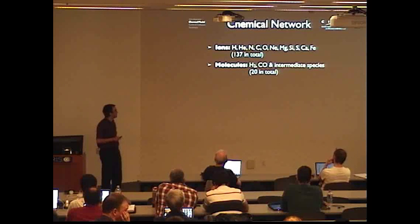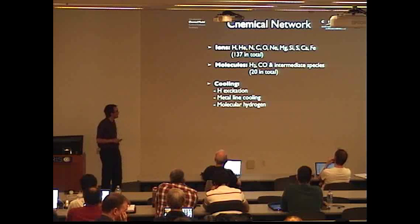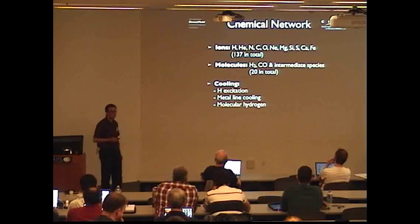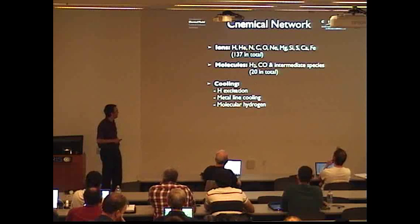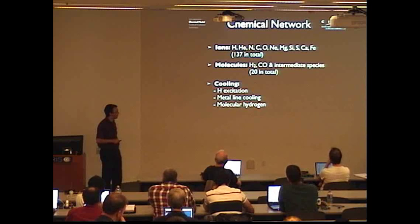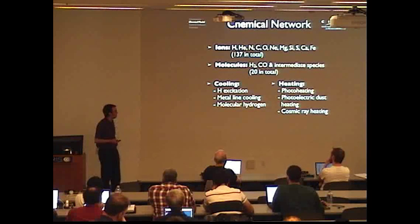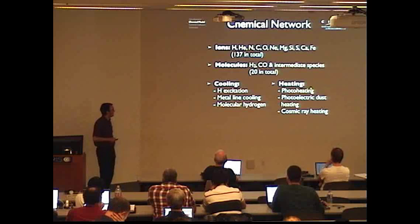Once we have these abundances, we can calculate the cooling and heating rates of the gas. The thermal processes include cooling from atomic hydrogen, from metals, from molecules such as H2, and heating processes such as photo-heating and photoelectric dust heating from the UV radiation.